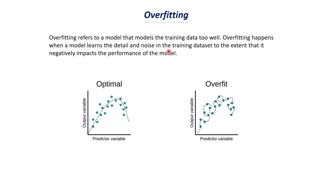Overfitting occurs because the model tries to learn the details and noises in the training data. Noises can be outliers and data points that don't make sense. A good model tries to ignore these noises and find a generalized value, whereas an overfitted model tries to fit all those data points — including the noisy ones.